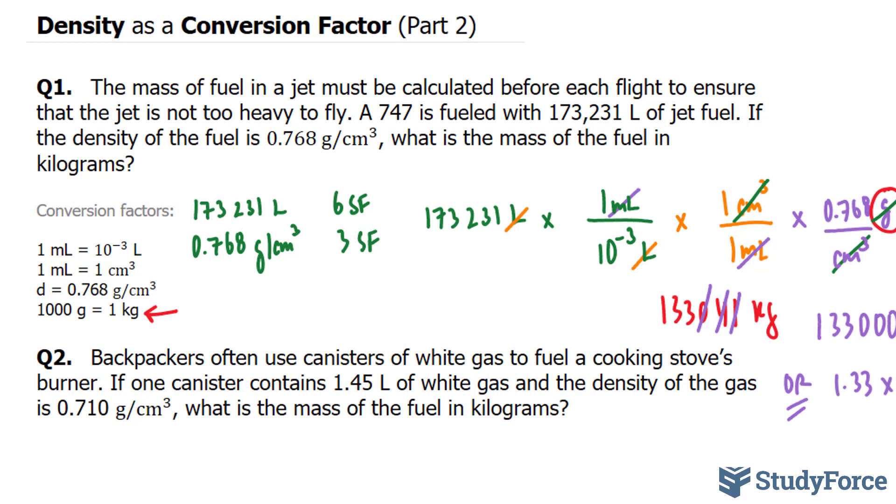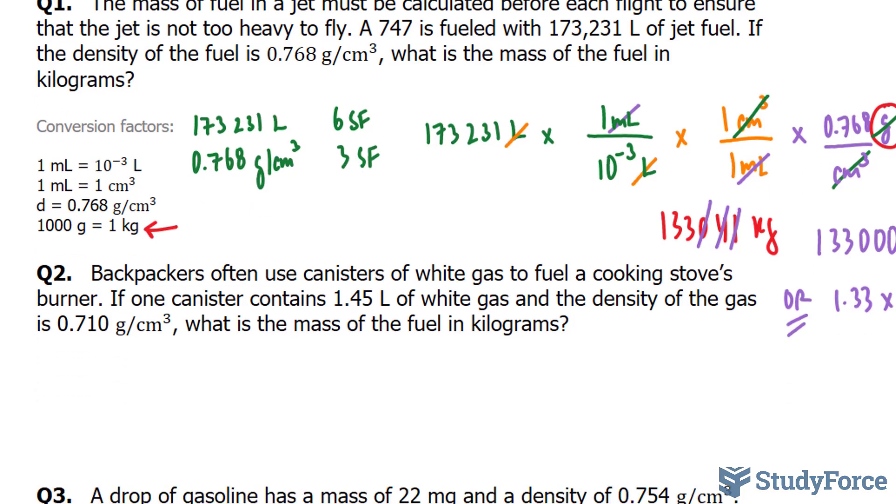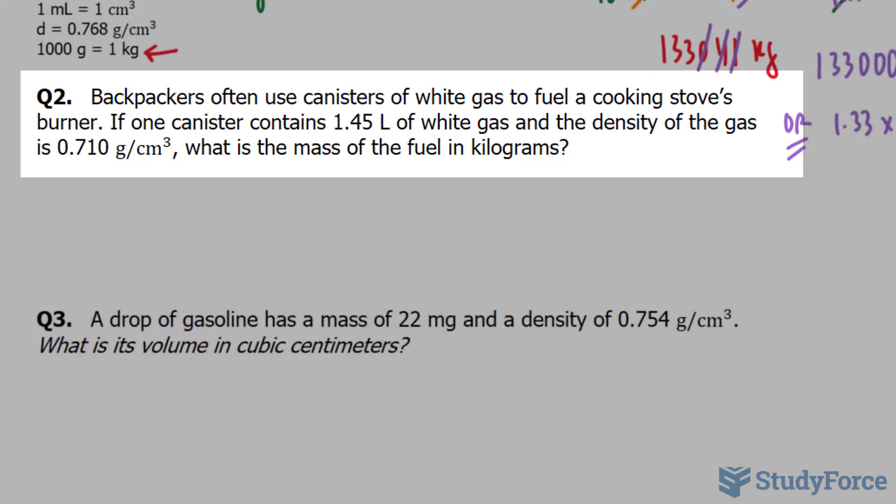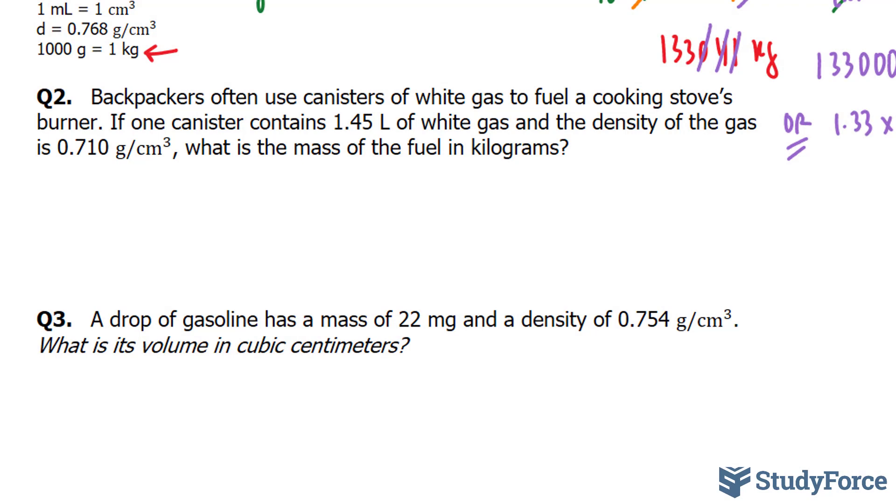In part 2 of this series, we'll continue answering the questions where we left off. We left off with question 2, and the question reads: Backpackers often use canisters of white gas to fuel a cooking stove's burner. If one canister is 1.45 liters of white gas and the density of the gas is 0.710 grams per centimeters cubed, what is the mass of the fuel in kilograms? One thing I want to mention before we start the calculation is that this is 3 significant figures, and so is this. So our final answer should have 3 significant figures.